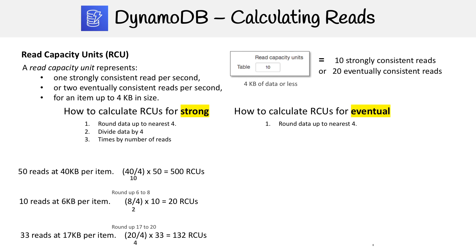So the first thing is, we're going to round the data up to the nearest four, we're going to divide by four, we're going to times by the number of reads, then we're going to divide the final number by two, and then we have to round up to the nearest whole number.